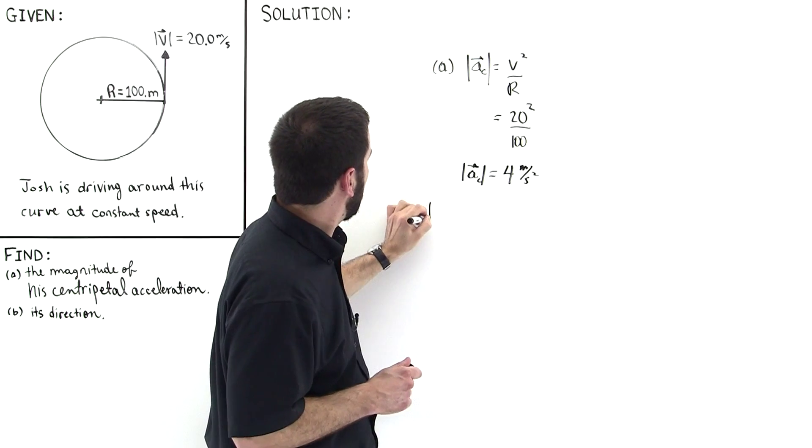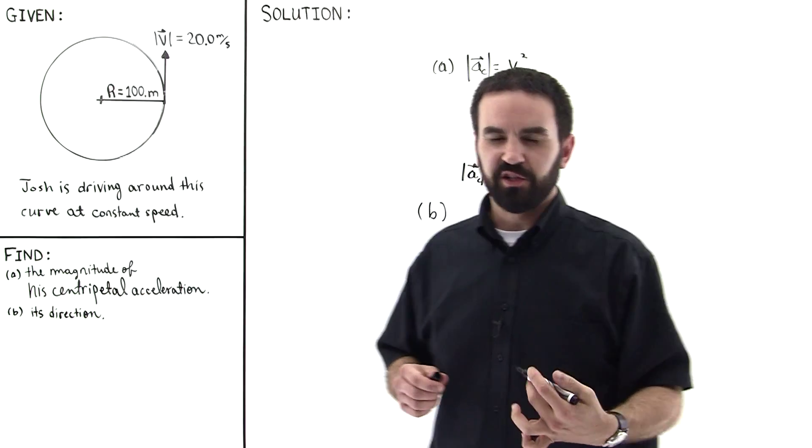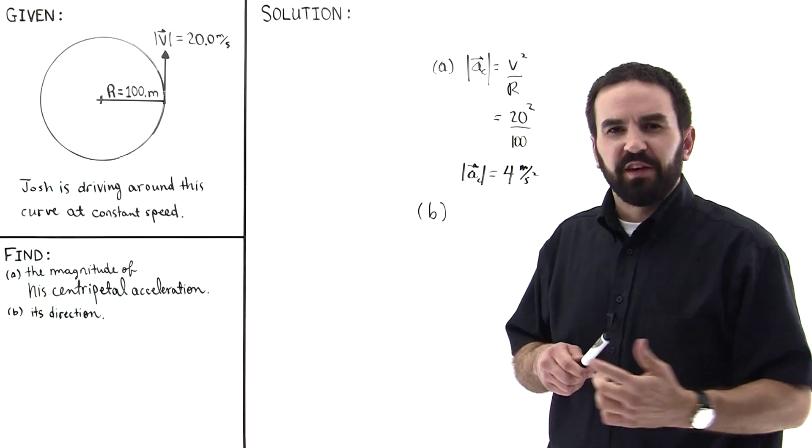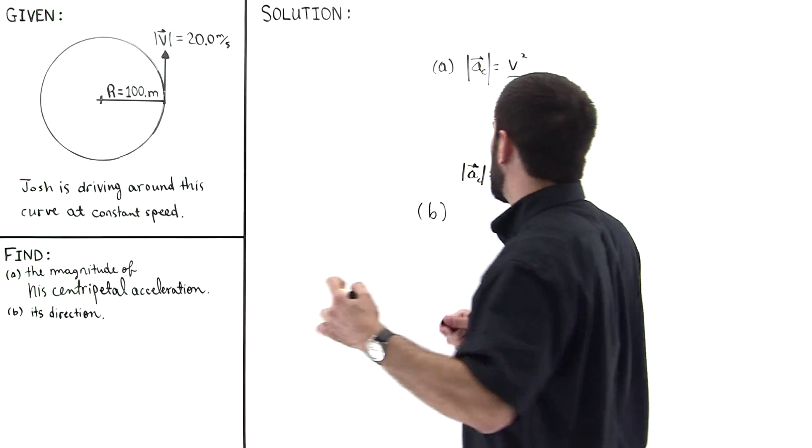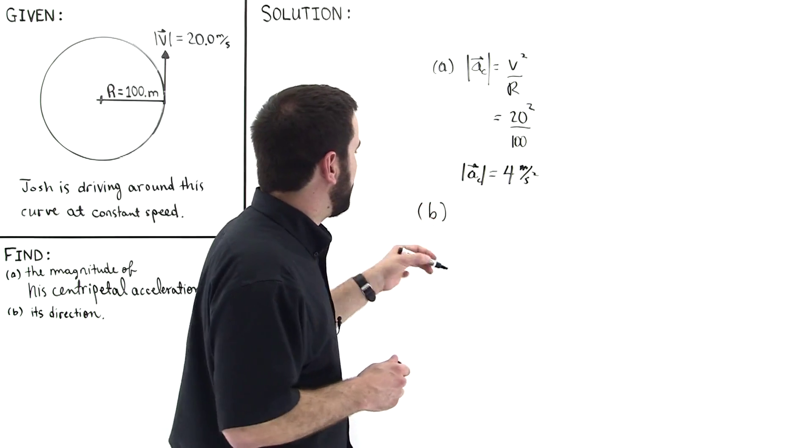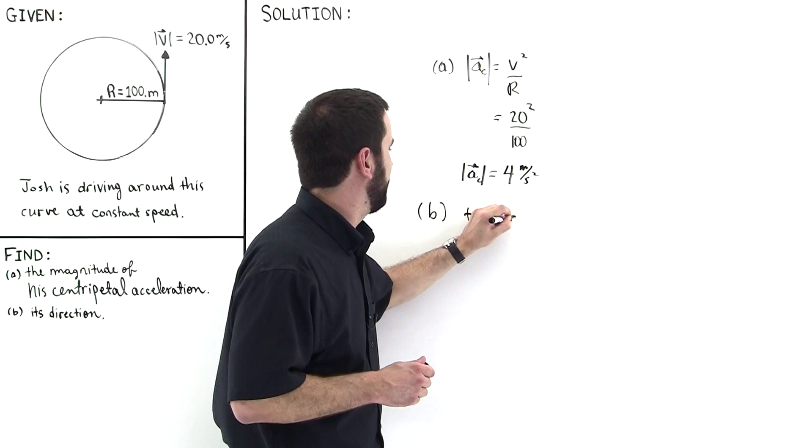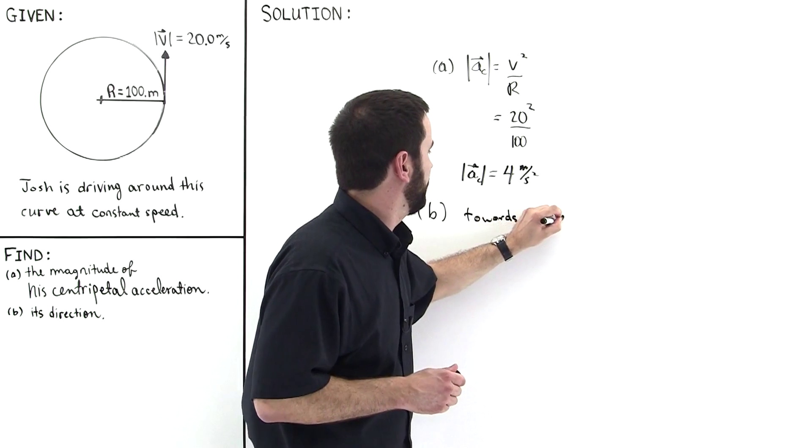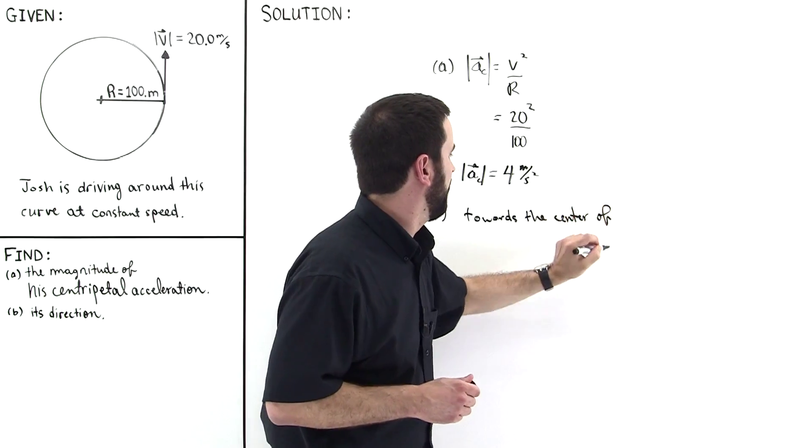Okay. For part B, we're asked to find its direction. Well, the direction of the centripetal acceleration will always be towards the center of the circle. So we could write the words, towards the center of the circle, and that would be sufficient.